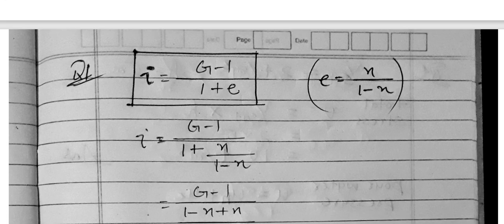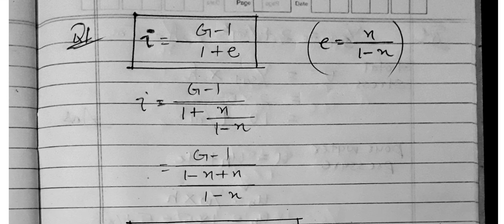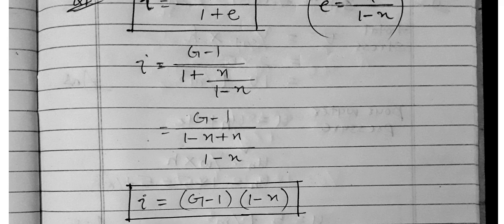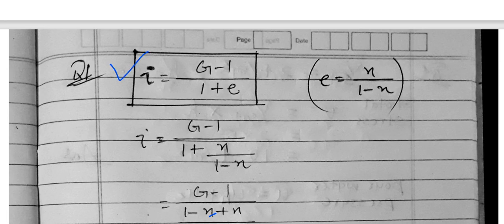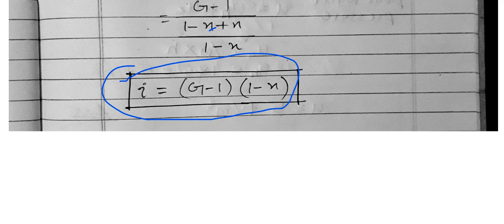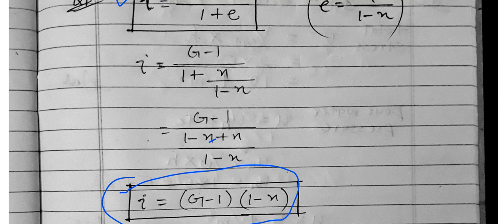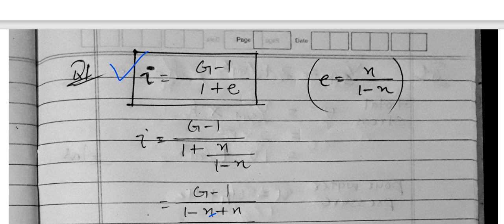The E value is the void ratio, and porosity N relates as E equals N divided by (1 minus N). Substituting, we get Z minus 1 over 1 plus N/(1−N), and the N terms cancel, giving the expression in terms of porosity: hydraulic gradient equals (Z − 1) × (1 − N). In terms of void ratio: I equals (Z − 1) / (1 + E).